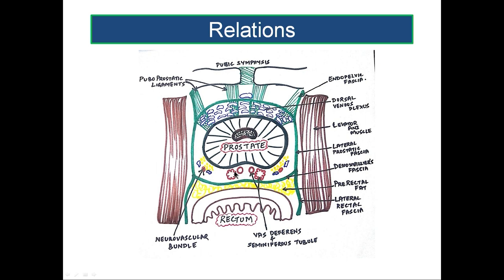The medial ones are the ejaculatory ducts, formed by the union of the vas deferens medially with the seminal vesicles laterally. Lateral to this, towards the lateral edge of the posterior surface, you will find a neurovascular bundle running in the fascia. These are some of the relations of the prostate.